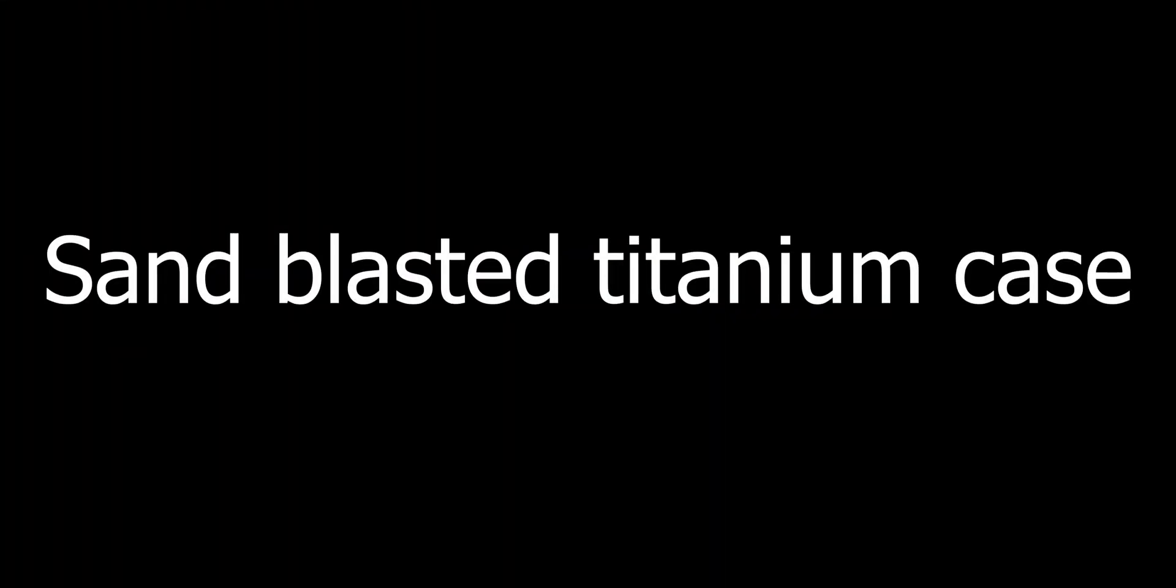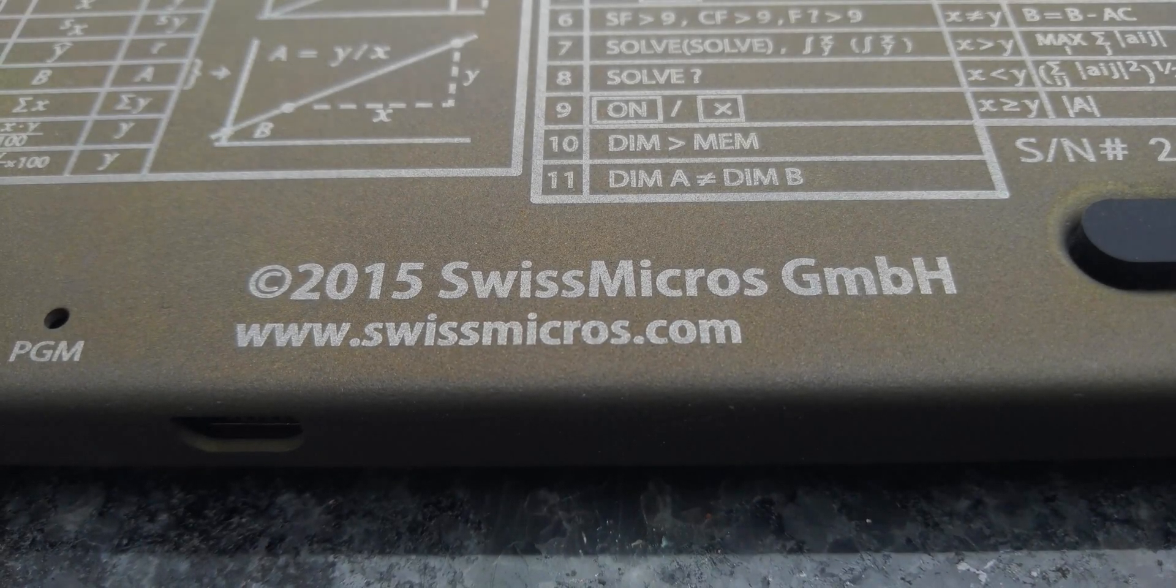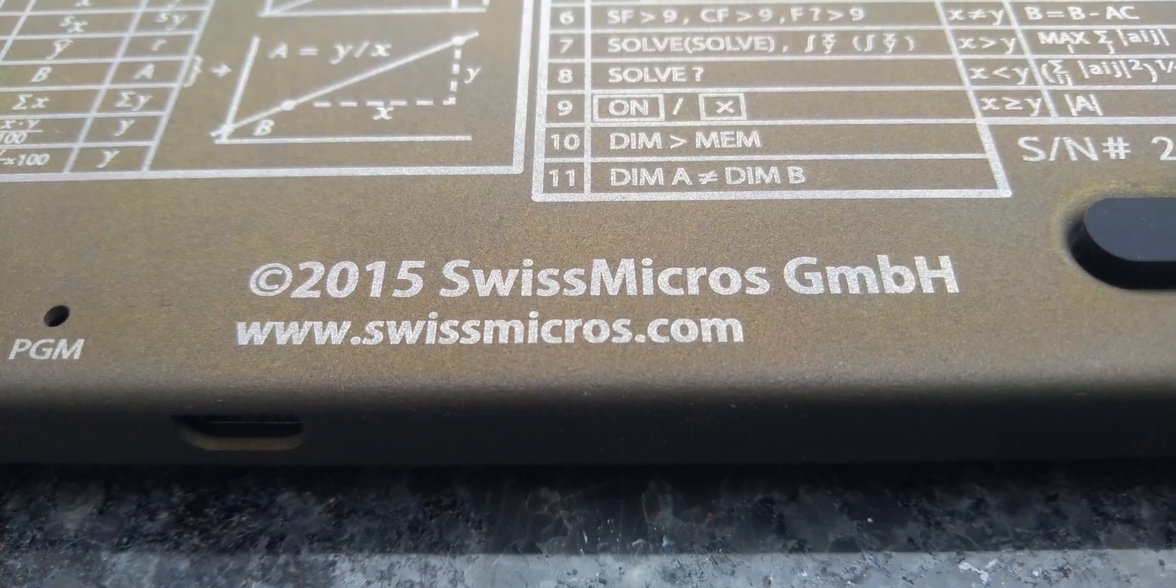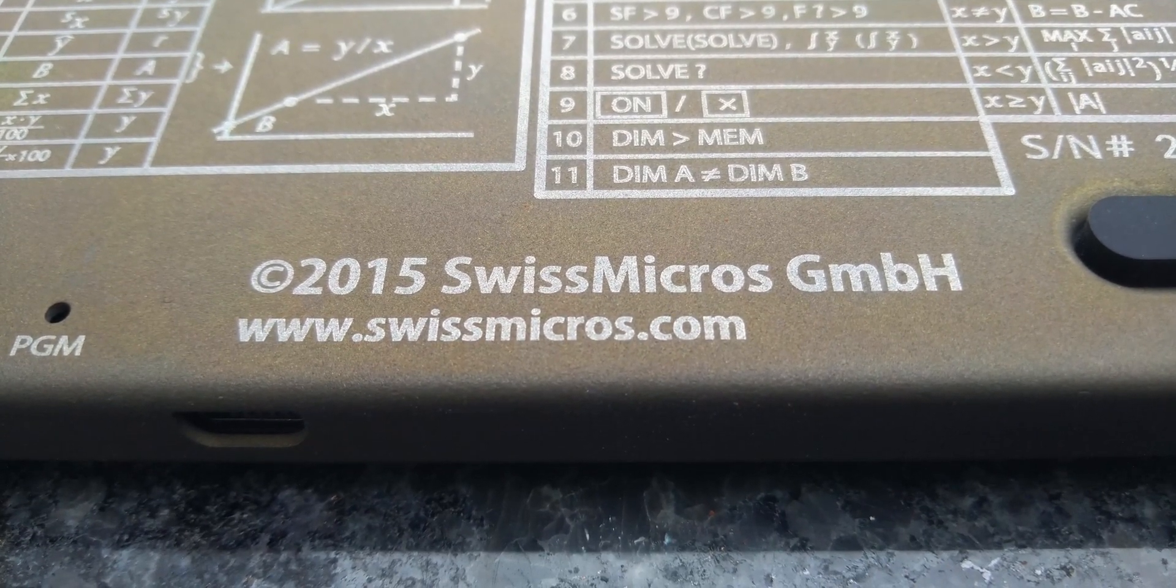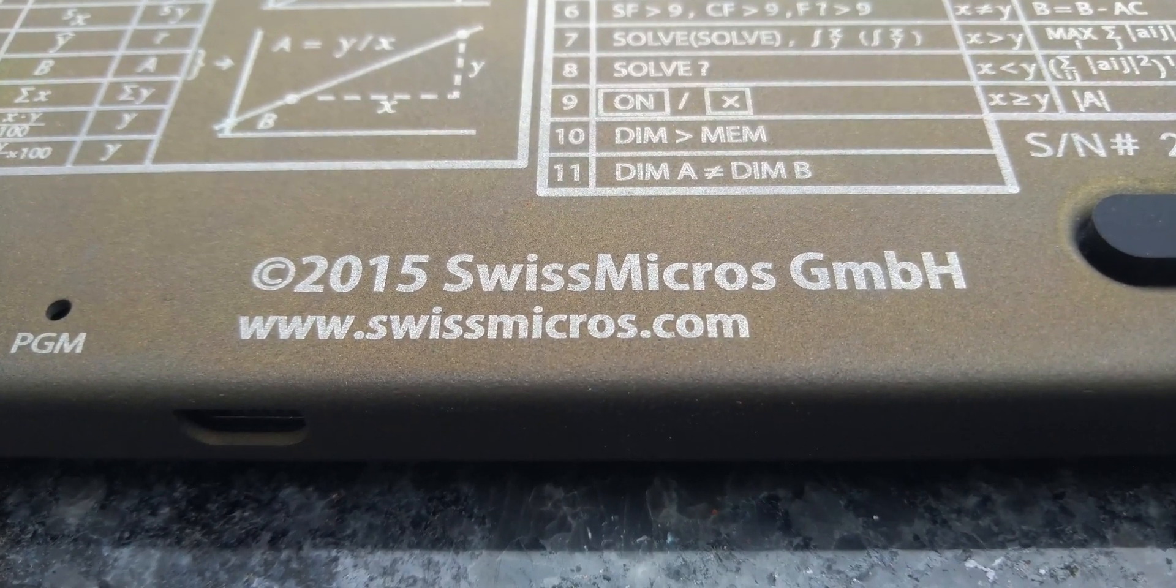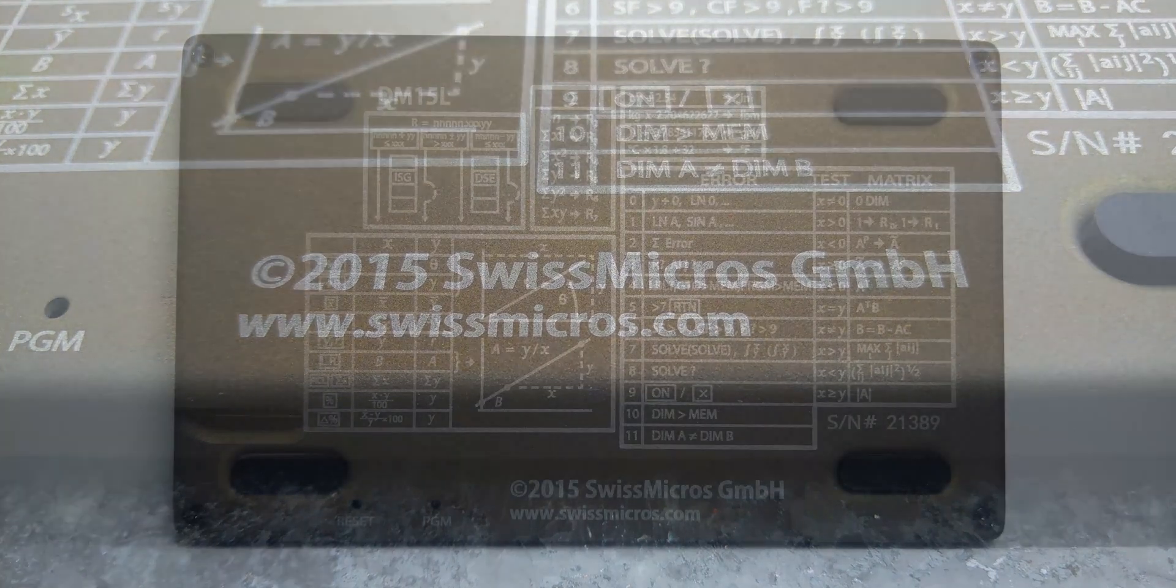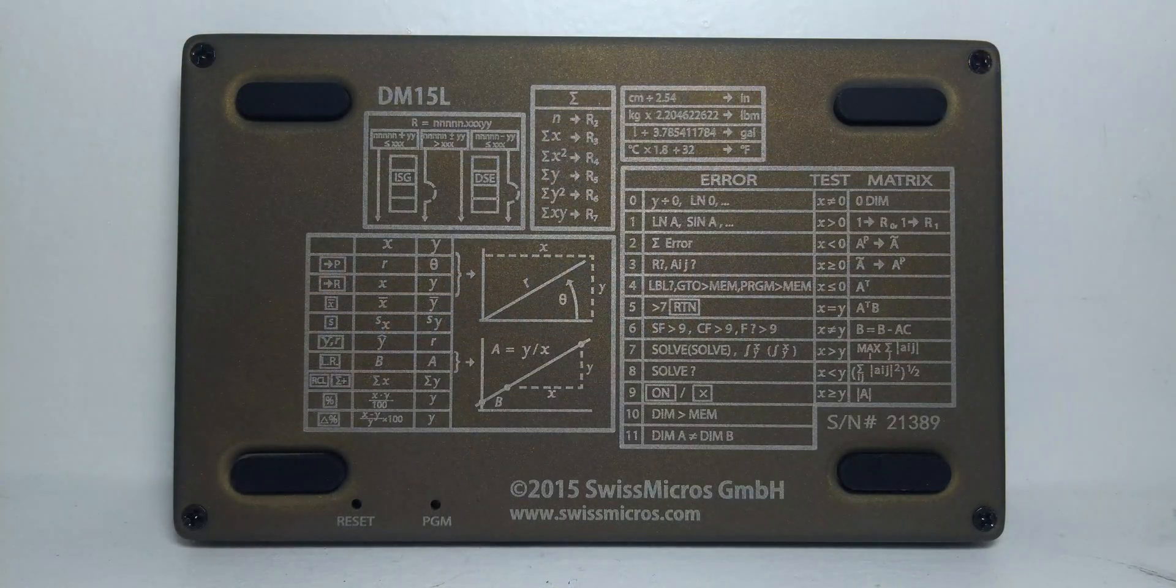The case is made up of titanium and it is sandblasted, anodized in this nice brown color. As it is sandblasted, your palm has a nice grip to it. We have the model number, error chart, conversion table, and many other details on the back etched by laser.